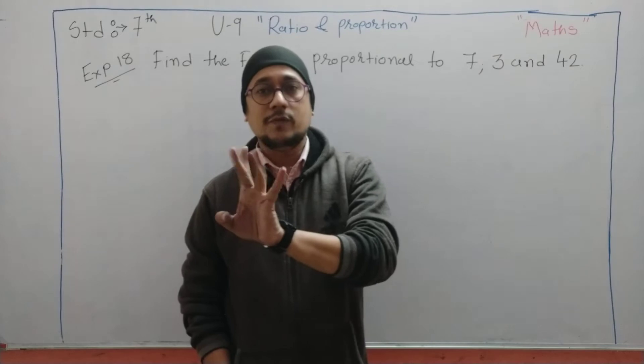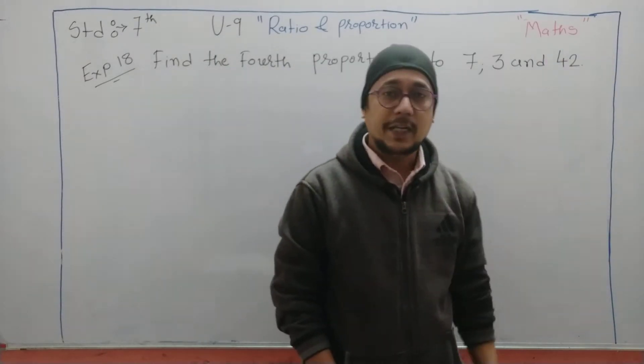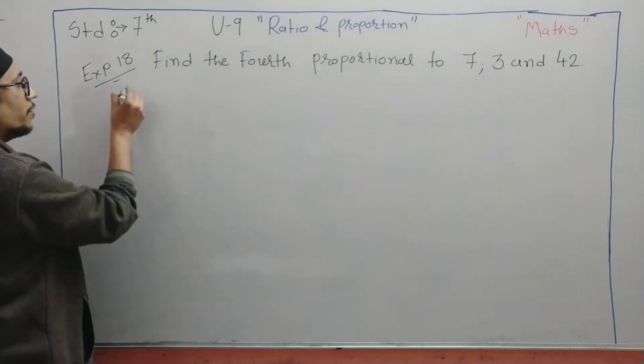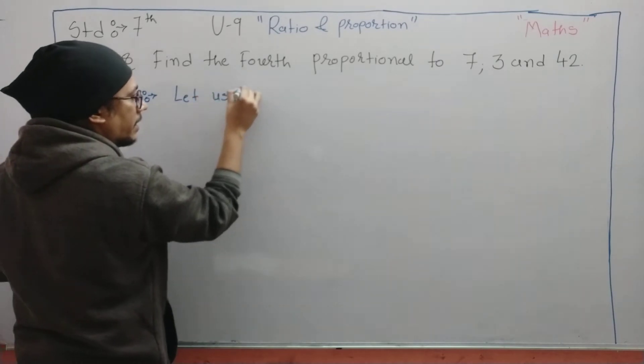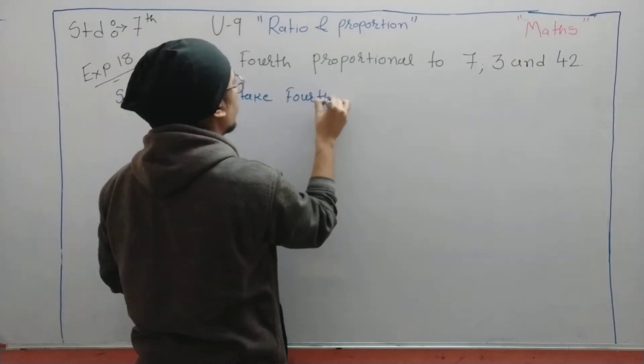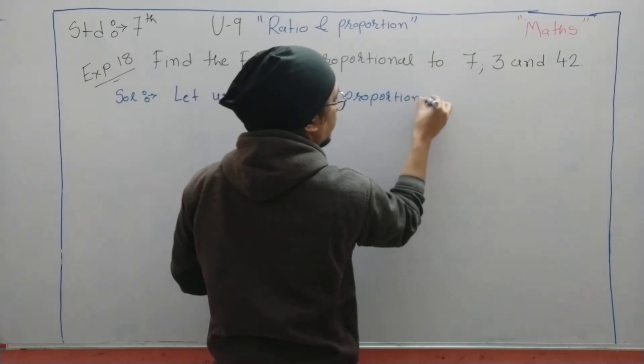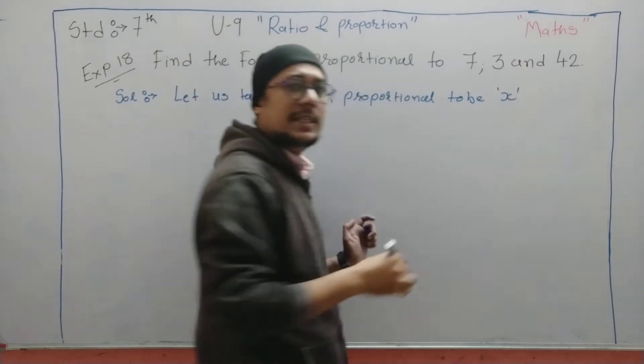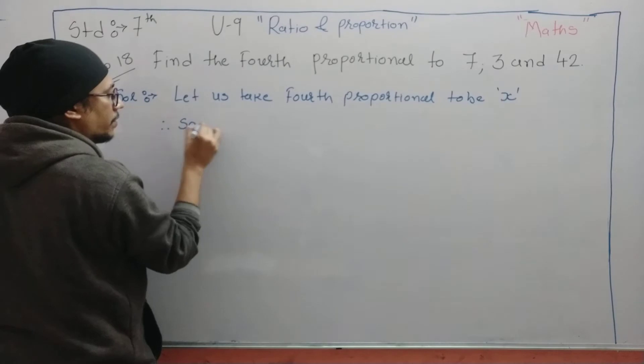We have to find the fourth one. We don't know which the fourth one is - that means it will come after 42 only. So let us take our solution. We are going to start the solution. Let us take the fourth proportional to be x.